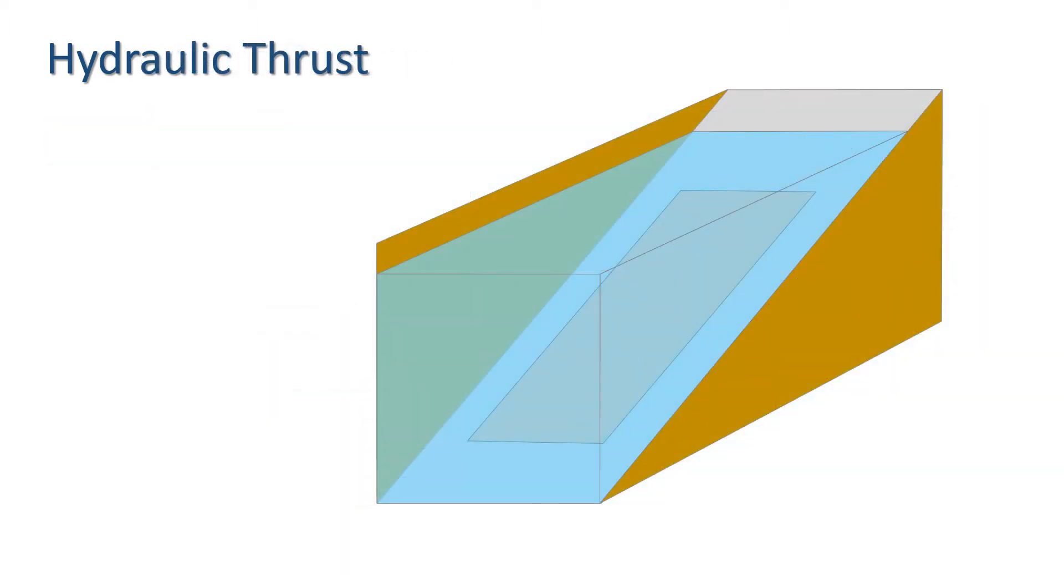Suppose we have a plane surface which is submerged in the fluid. To help with visualisation, let's mark the line where the fluid intersects with the surface and label it OO.